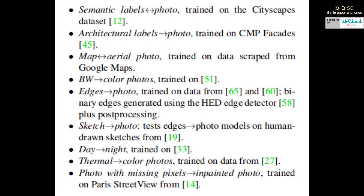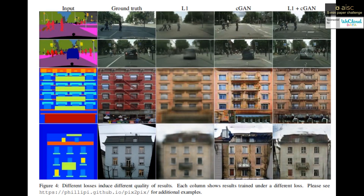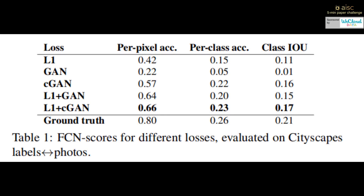Now for the experiments and results — the authors test their general framework against several datasets. In the next slide you can compare the ground truth with the L1-only output and the L1 plus cGAN output to see how good the results are. The scores show that L1 and cGAN together generate the best results.